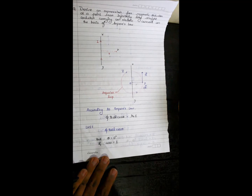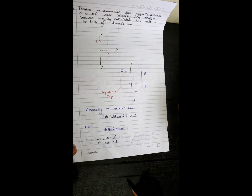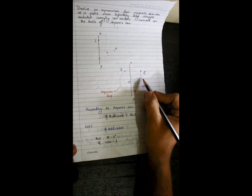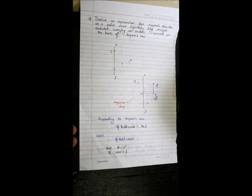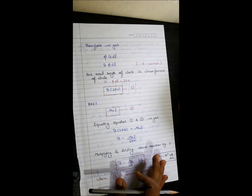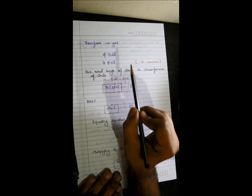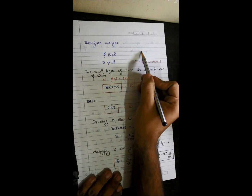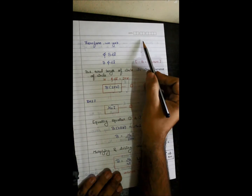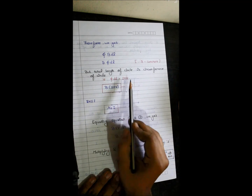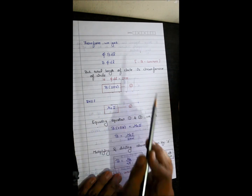Taking LHS: ∮BdL cosθ. The angle between B and DL is 0°, so cos0° = 1. Therefore we get ∮B·dL. Since magnetic induction B is constant, I take B outside: B∮dL. The integration of DL over the entire circle equals the circumference, which is 2πR. So equation 1 is: B × 2πR.